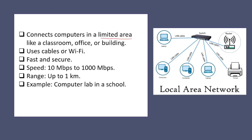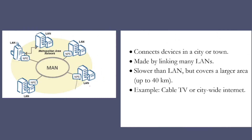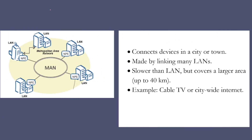For LAN — Local Area Network — the area it covers is a limited area like a classroom, office, or building. It uses cable or Wi-Fi, and it is fast and secure. If you remember the speed, you can mention it is 10 Mbps to 1000 Mbps, with a range of up to one kilometer. An example is a computer lab.